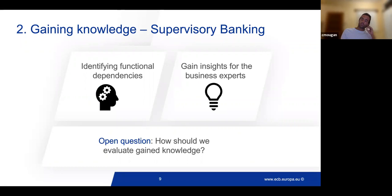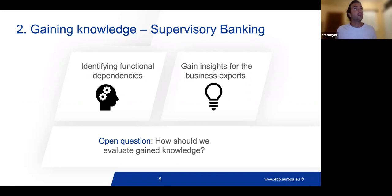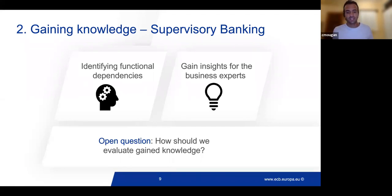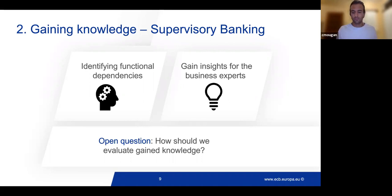Second, we have gaining knowledge, which is a key need in the supervisory banking case. There are cases where we need to gain new knowledge — to identify functional dependencies, find new patterns in the data, and extract insights that deliver more information. Business experts are also looking to gain insights. An open question here is how should we evaluate knowledge, since we detect a potential source of bias: when data is biased, the model is biased, and the knowledge we gain may also be highly biased. This is an open research question — how should we evaluate gaining knowledge and identify potential bias within it?